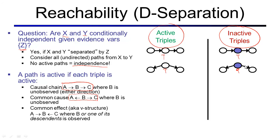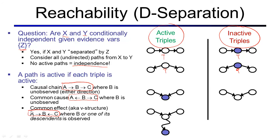Now let's consider a v-structure or a common effect. Here the middle node b is pointed to by both a and c. Here we have a slightly different story. If the middle node is observed, we have an active triple. If any of the descendants of the middle node are observed, we also have an active triple. If the middle node is not observed and none of its descendants are observed, we have an inactive triple.